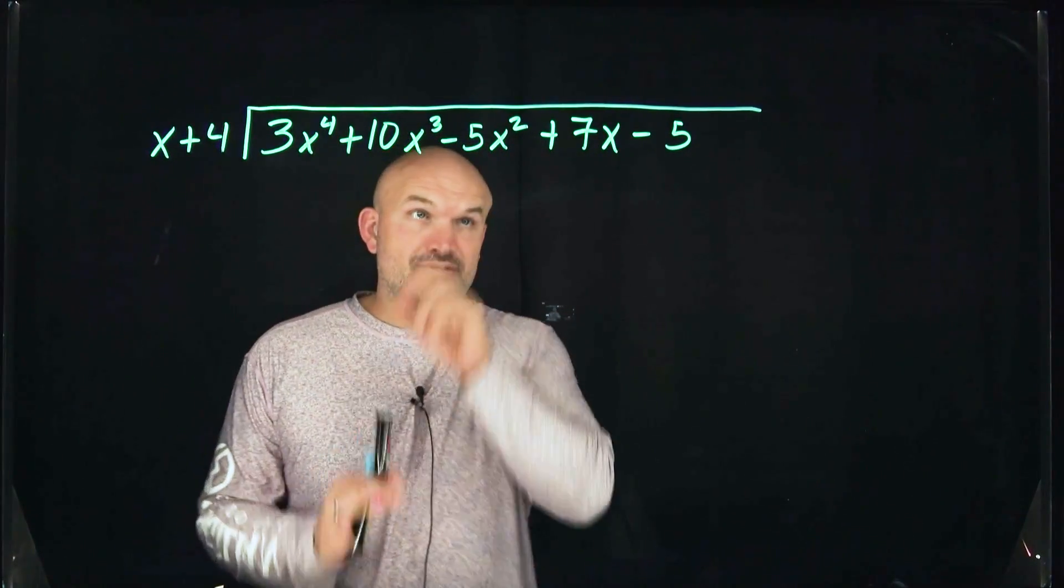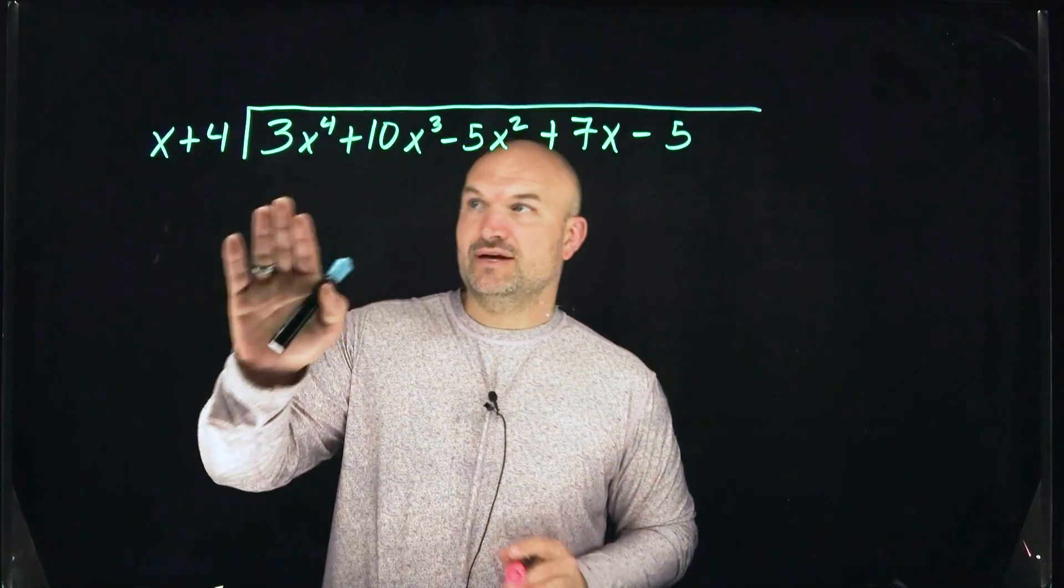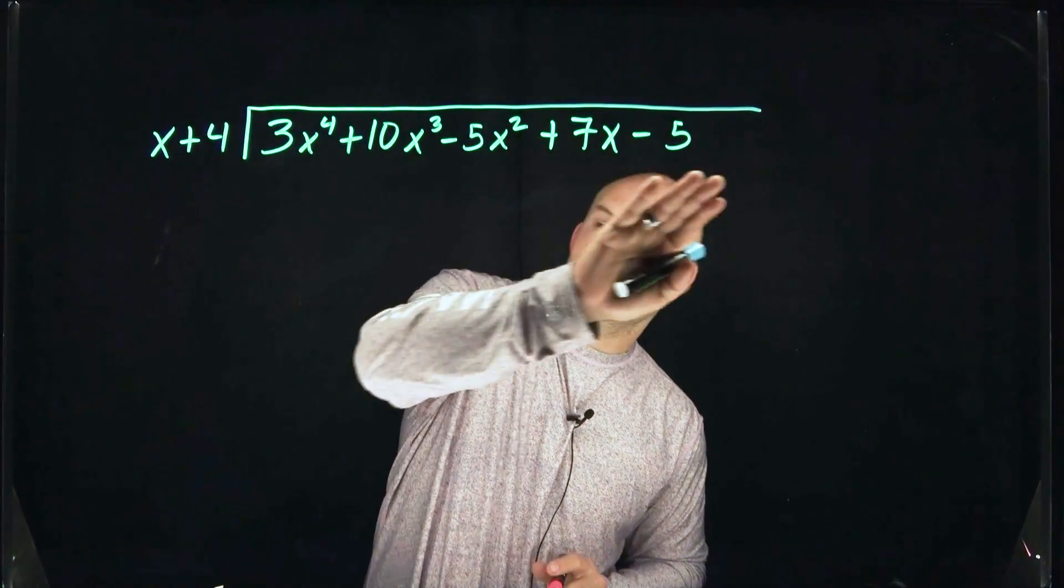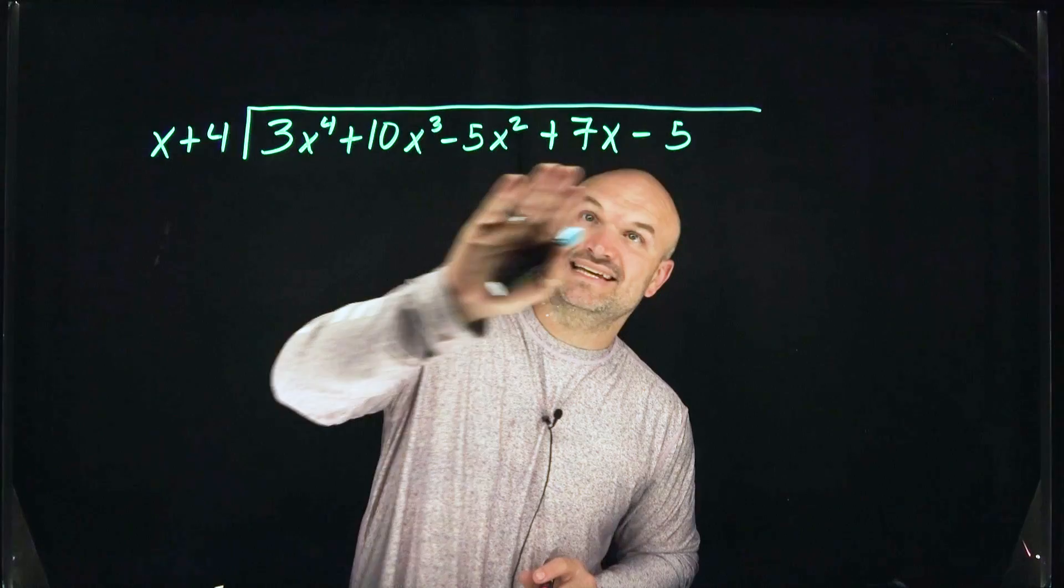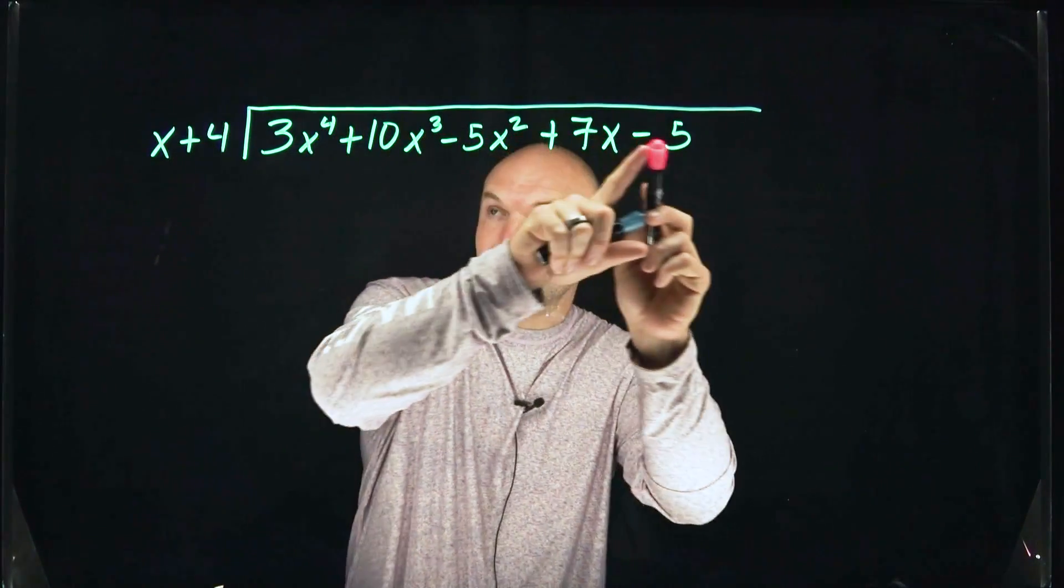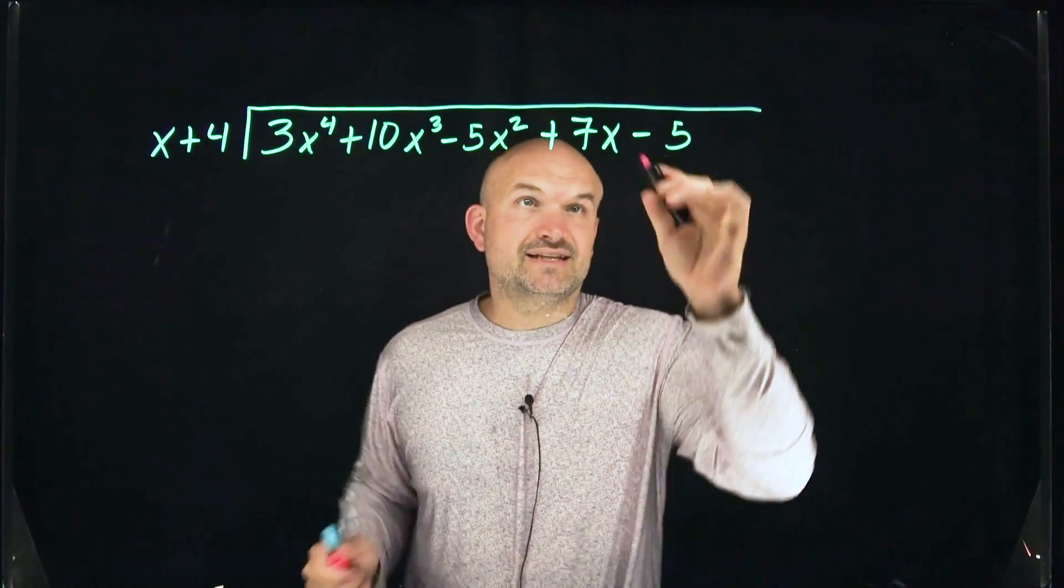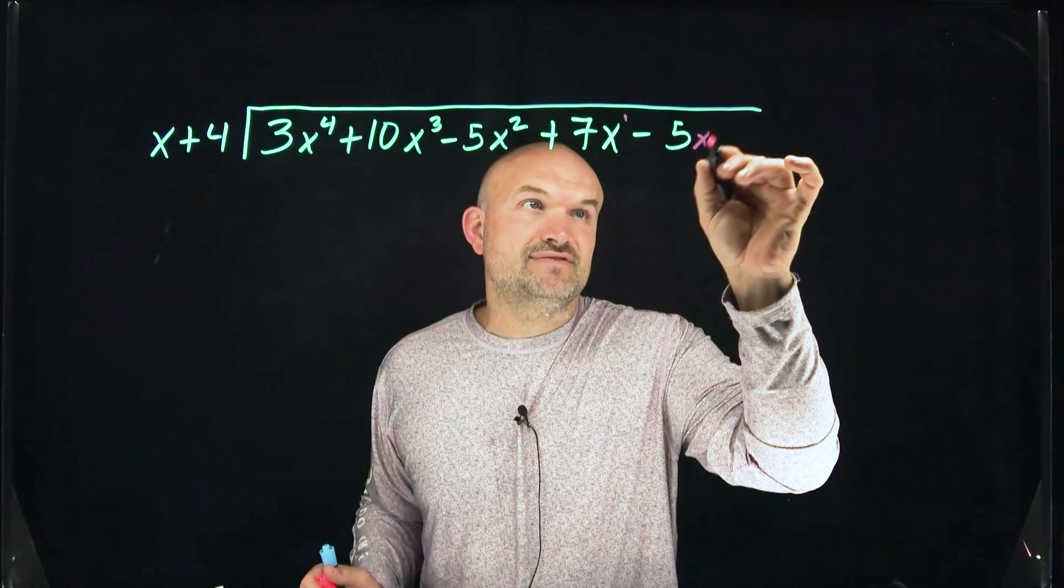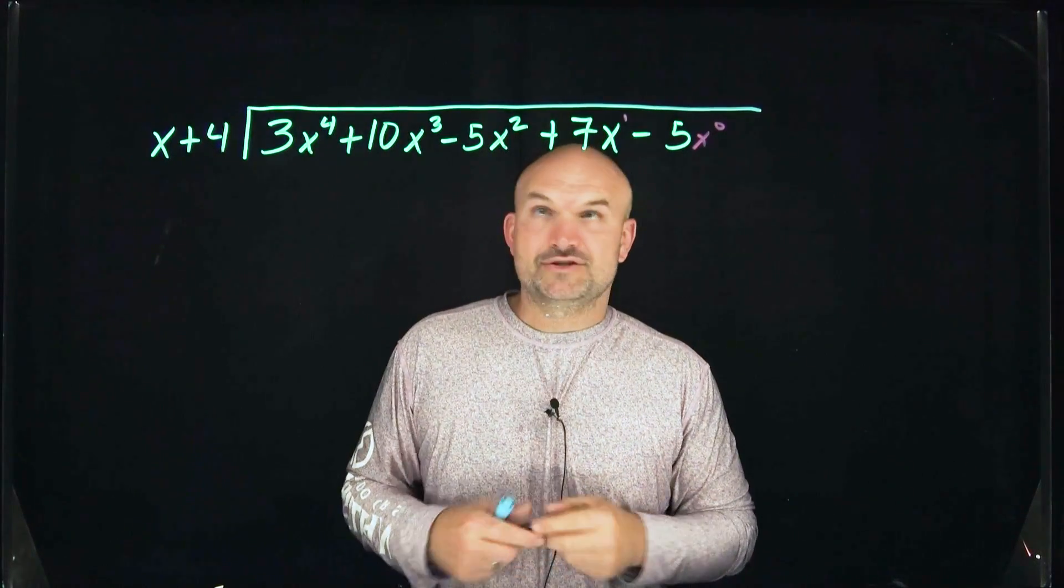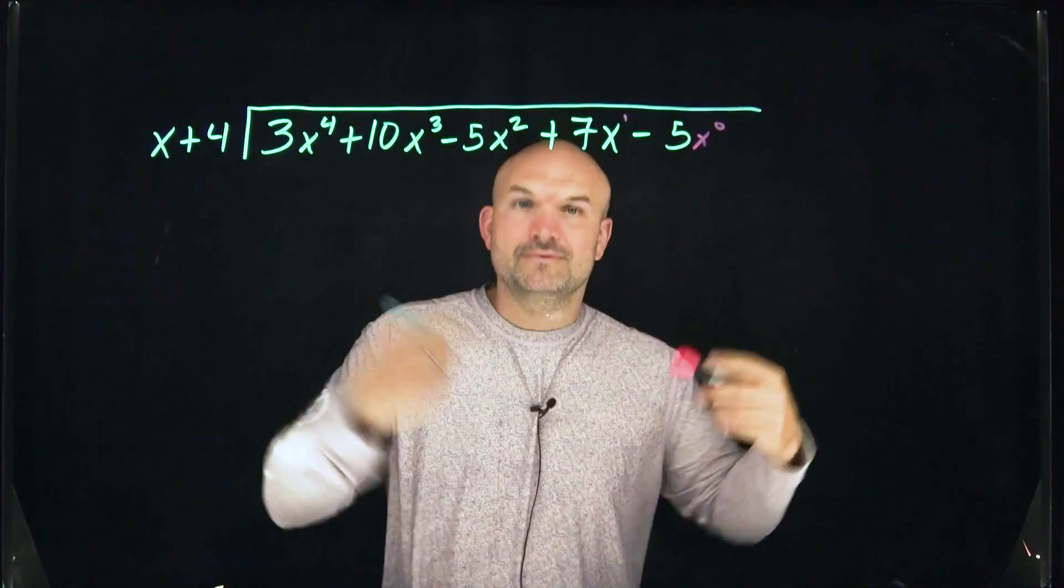So the first thing when we're doing long division, we always want to make sure that we have our dividend in descending order. That means we have the highest power going down in descending order and the same thing for our divisor. So you can technically say there is a one there and you could even say there's a zero if you really want to, but just notice four, three, two, one, zero. We're all good.